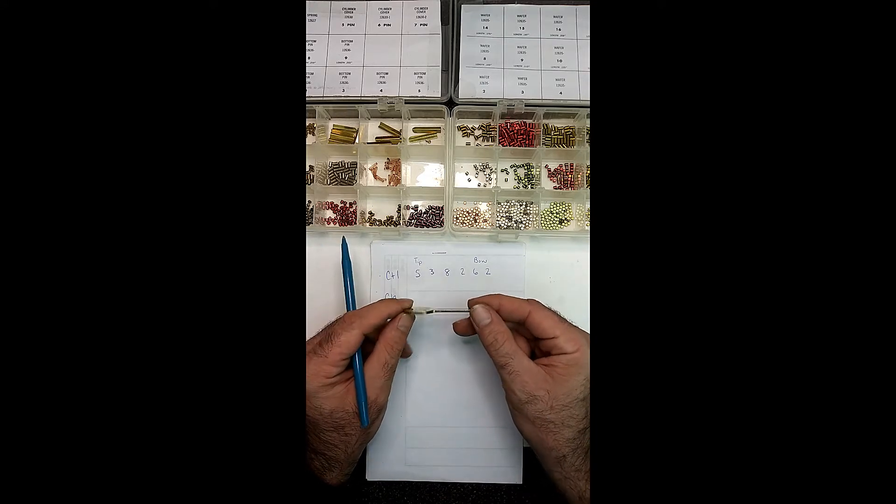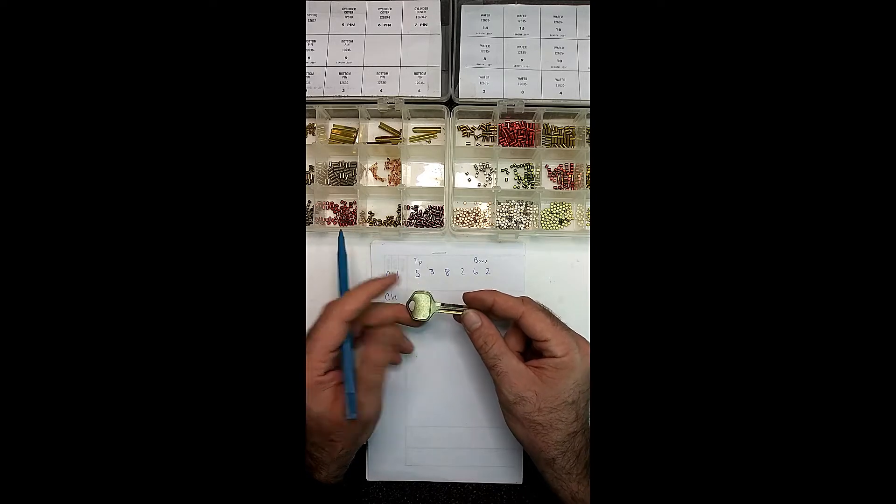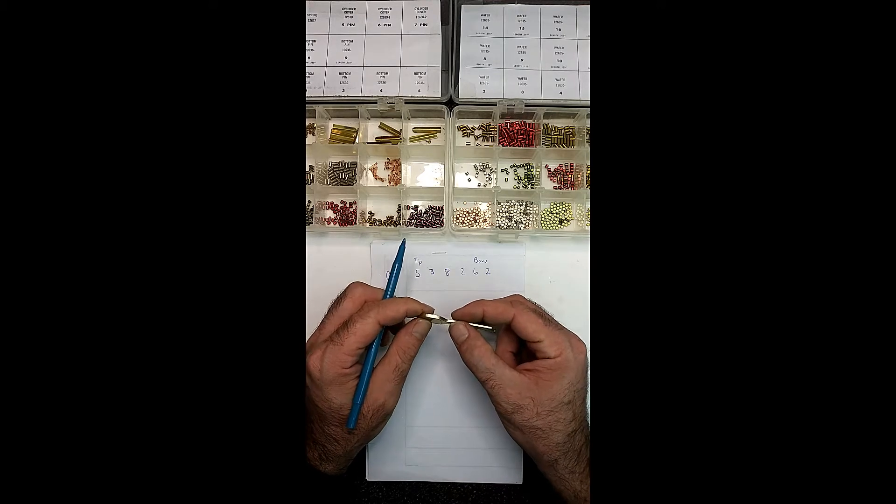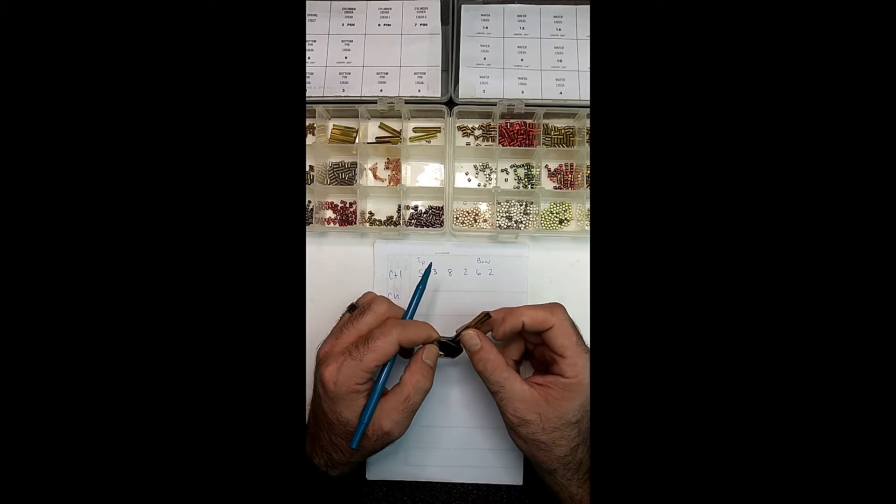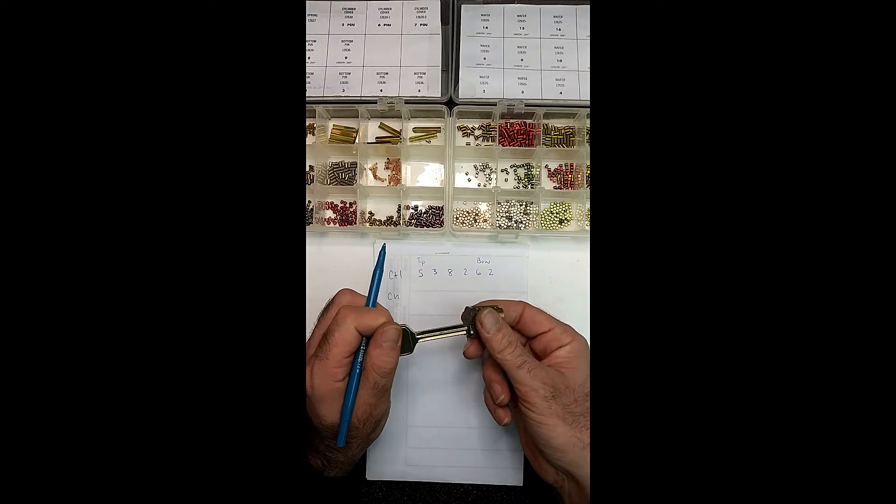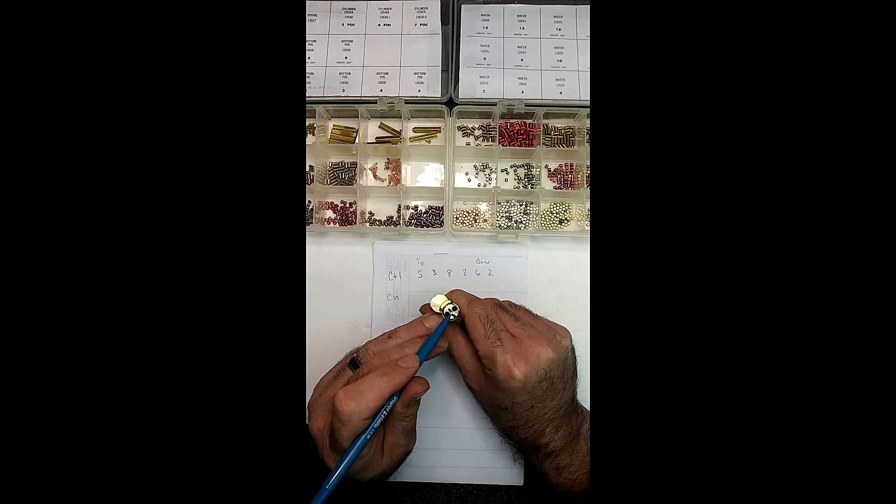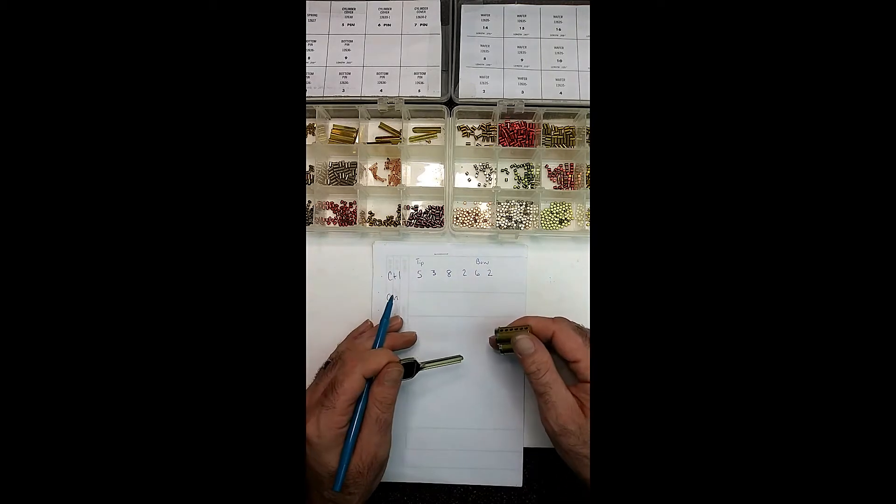Small format interchangeable core keys are different from every other key, because as you can see here, there's no key stop or anything to stop the key when it's within the cylinder. It's actually this part back here. When you slide it through, you can see what I'm saying. The key blank just stops right here, and there's nothing over here. That's how you can have six and seven pin keys.